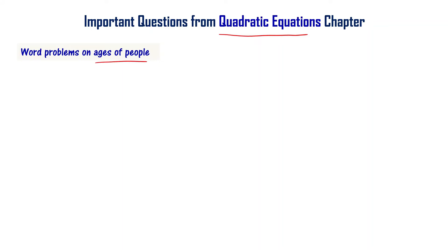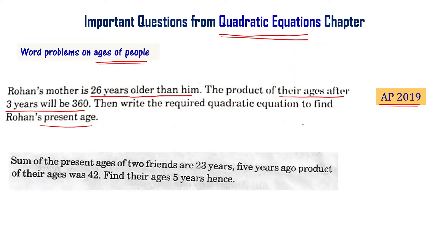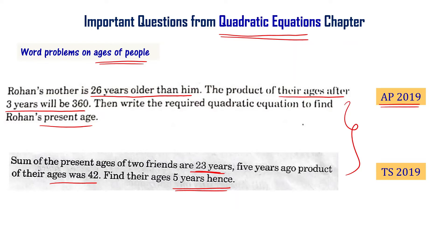Word problems on ages of people — an important topic from the quadratic equations chapter. We have two problems: Rohan's mother is 26 years older than him, and the product of their ages after three years will be 360 — write the required quadratic equation to find Rohan's present age. This is from the AP final exam 2019. The second problem: the sum of present ages of two friends is 23 years, five years ago the product of their ages was 42 — find their ages five years hence. This is from the Telangana final exam 2019.